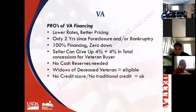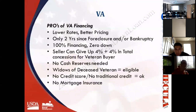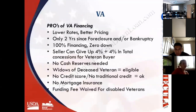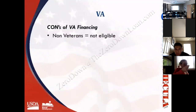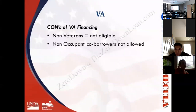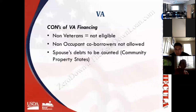No cash reserves are needed for VA loans. VA loans can be funded for widows of deceased veterans who never remarried. Veterans without traditional credit scores can be eligible. There is no mortgage insurance — no upfront MI and no annual MI — making it very attractive. Veterans with service-related disabilities at 10% disability can have their VA funding fee waived, meaning they end up financing exactly 100% of the purchase price and nothing more. The downside: only veterans or their spouses can be on the loan — no non-occupant co-borrowers as allowed with FHA.